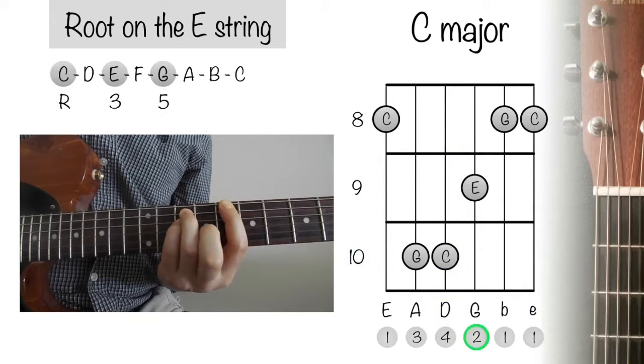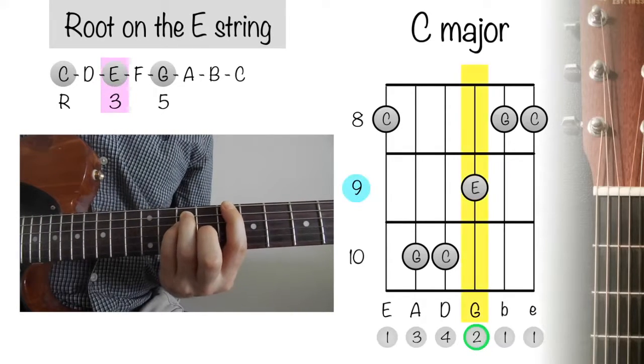Use finger number 2 to play the 3rd of the chord, E, on the 9th fret of the G string.